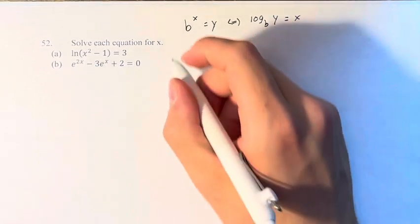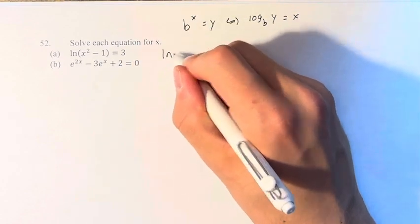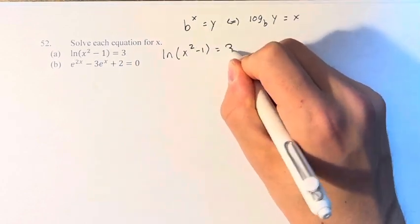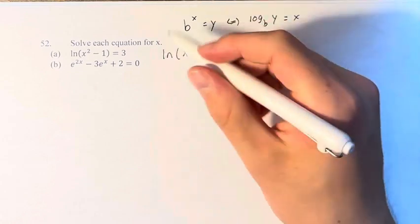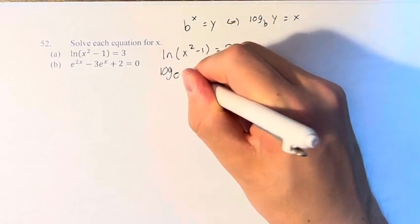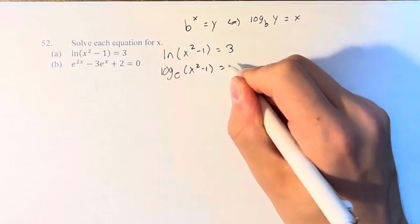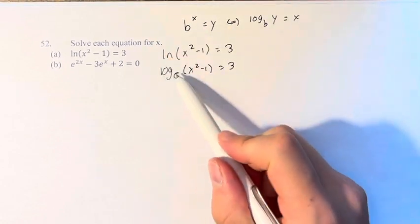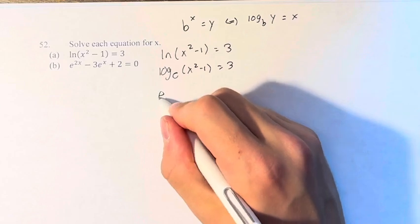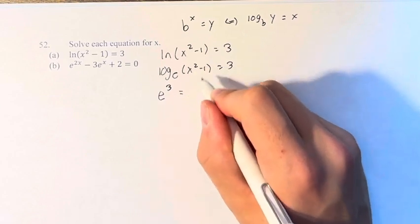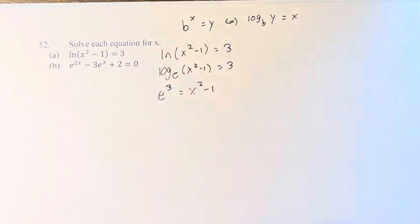So we're going to do that here. ln of x squared minus 1 equals 3. ln is log base e of x squared minus 1 equals 3. And now we can use this relationship to say e to the third power equals x squared minus 1.